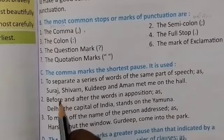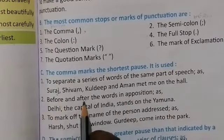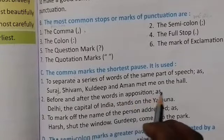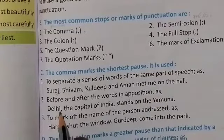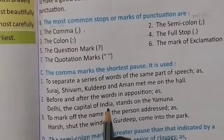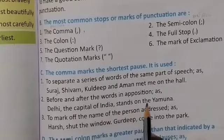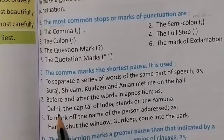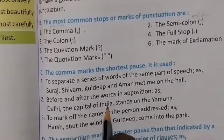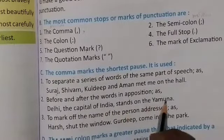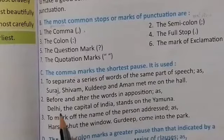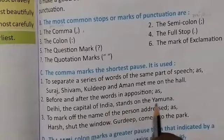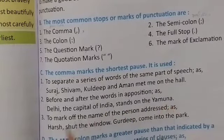The comma is also used before and after words in apposition, as: 'Delhi, the capital of India, stands on the Yamuna.' यहाँ Delhi जो capital है India की, Yamuna पर stand है — Delhi, the capital of India, stands on the Yamuna. Then full stop.